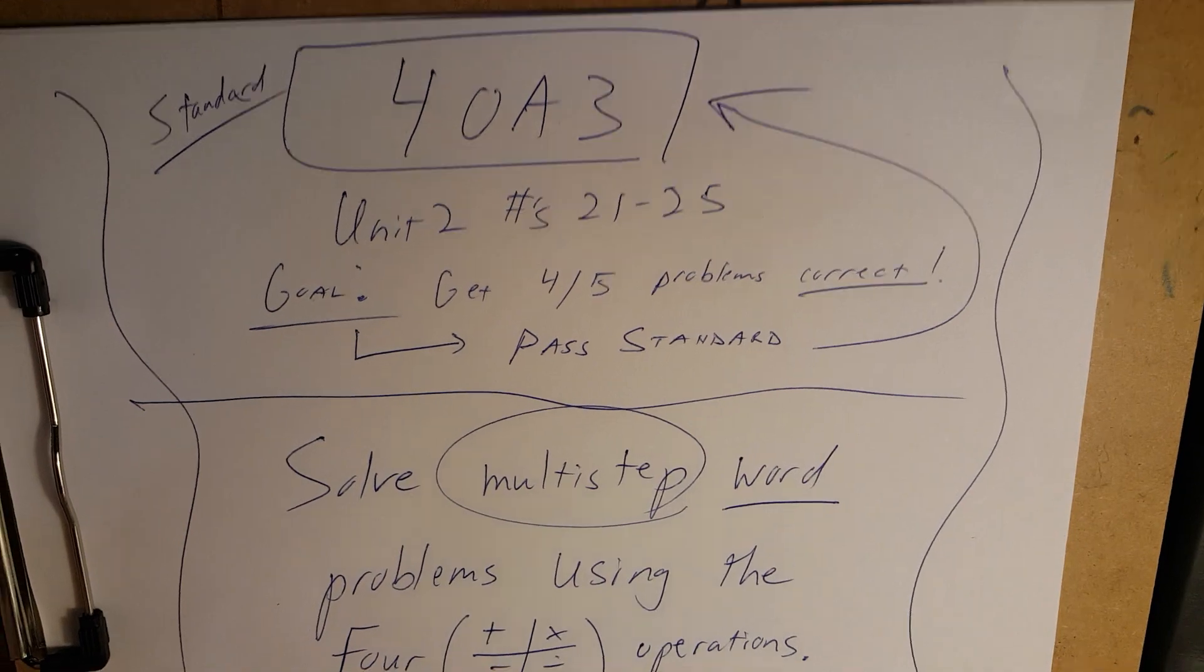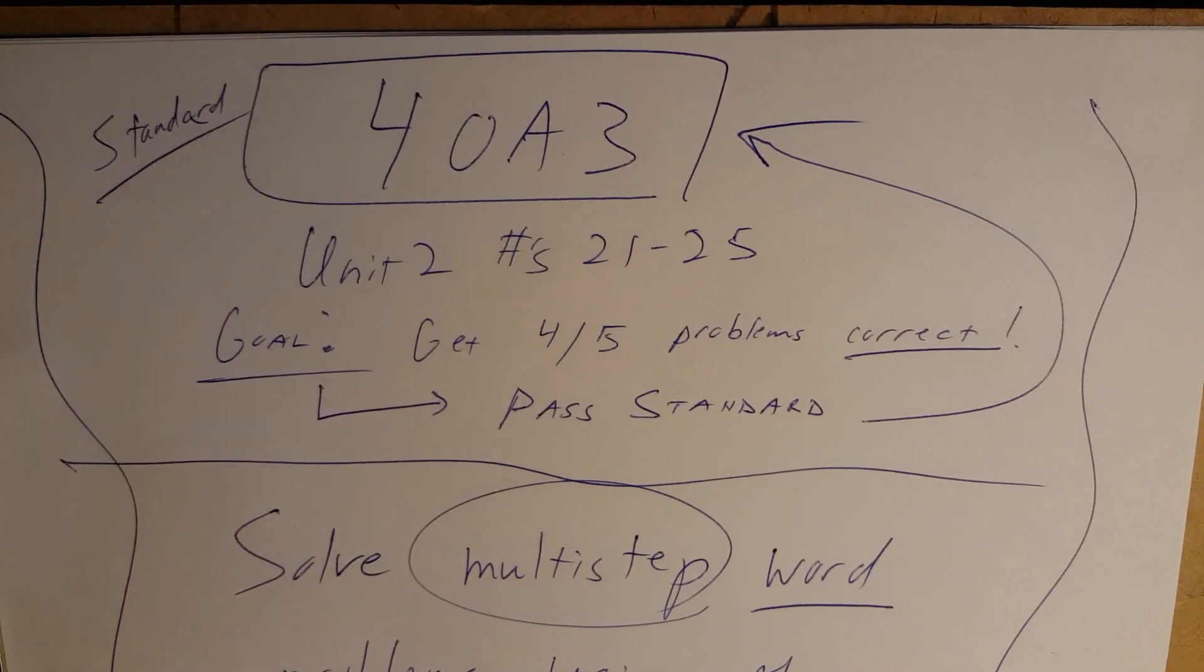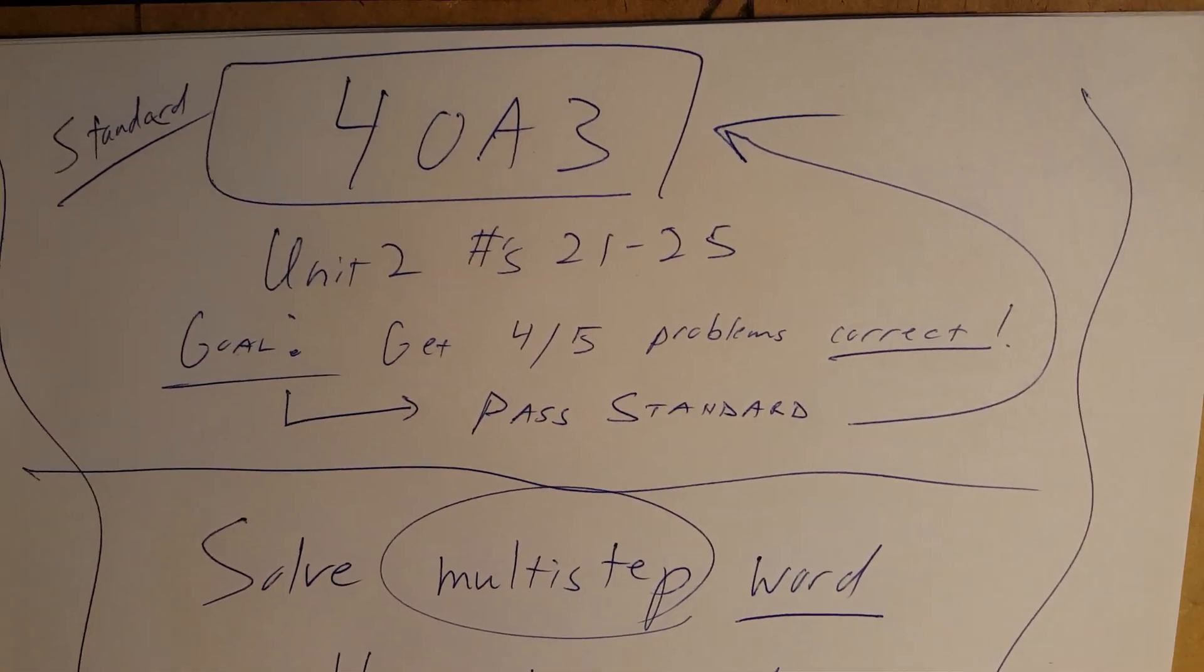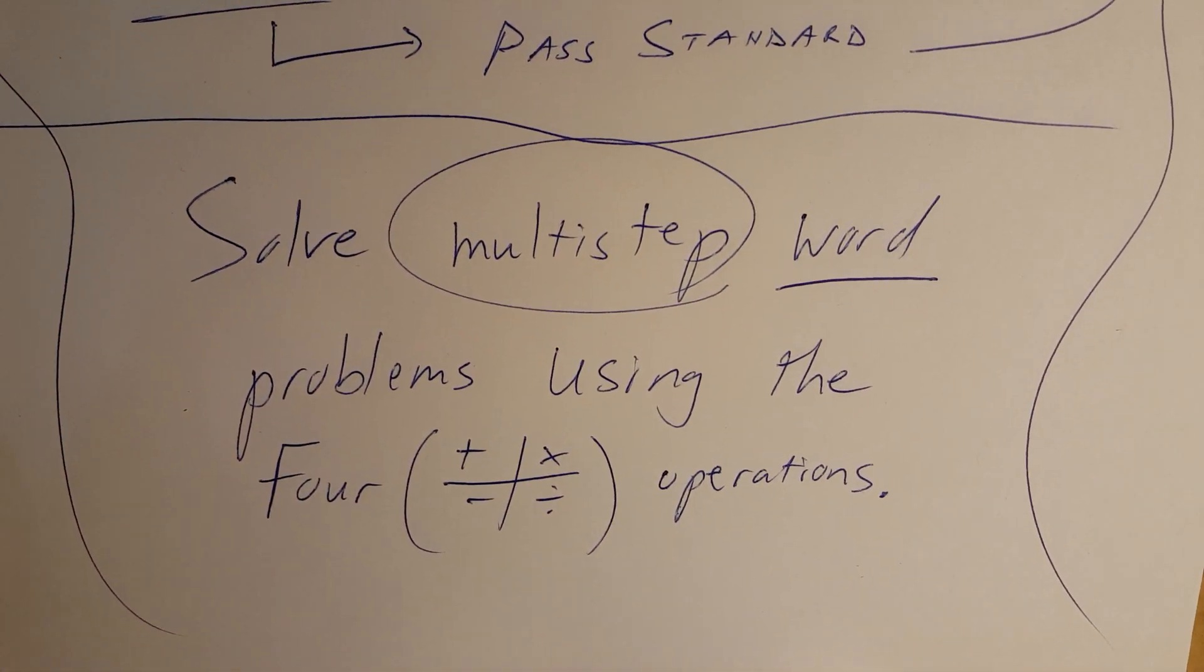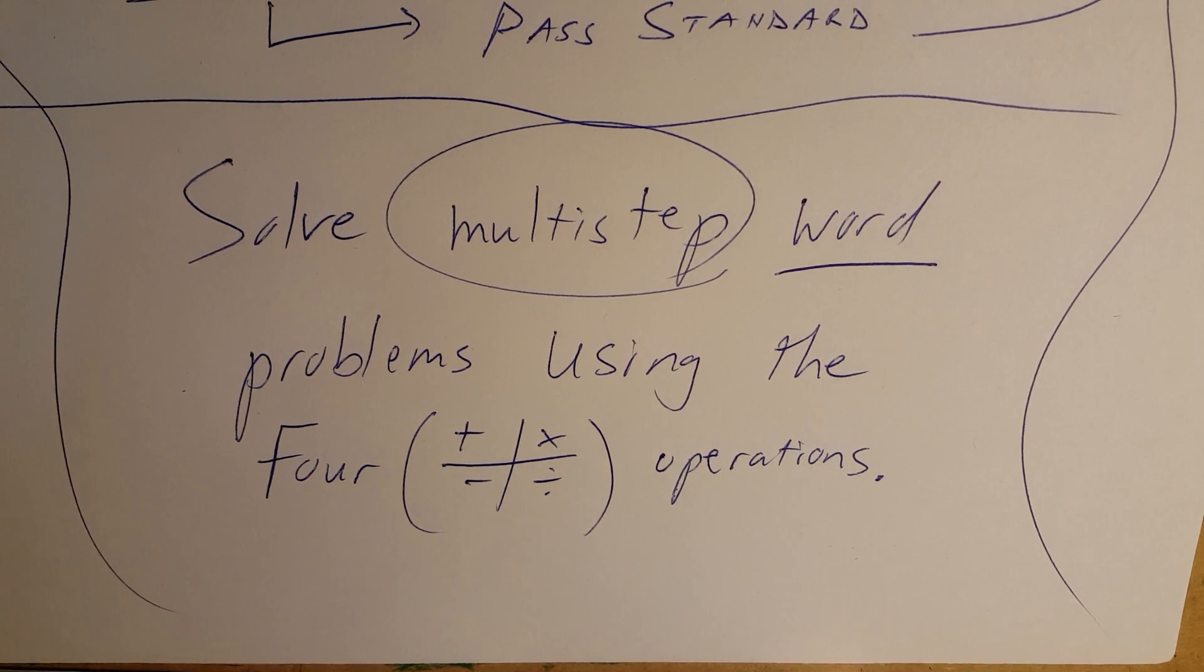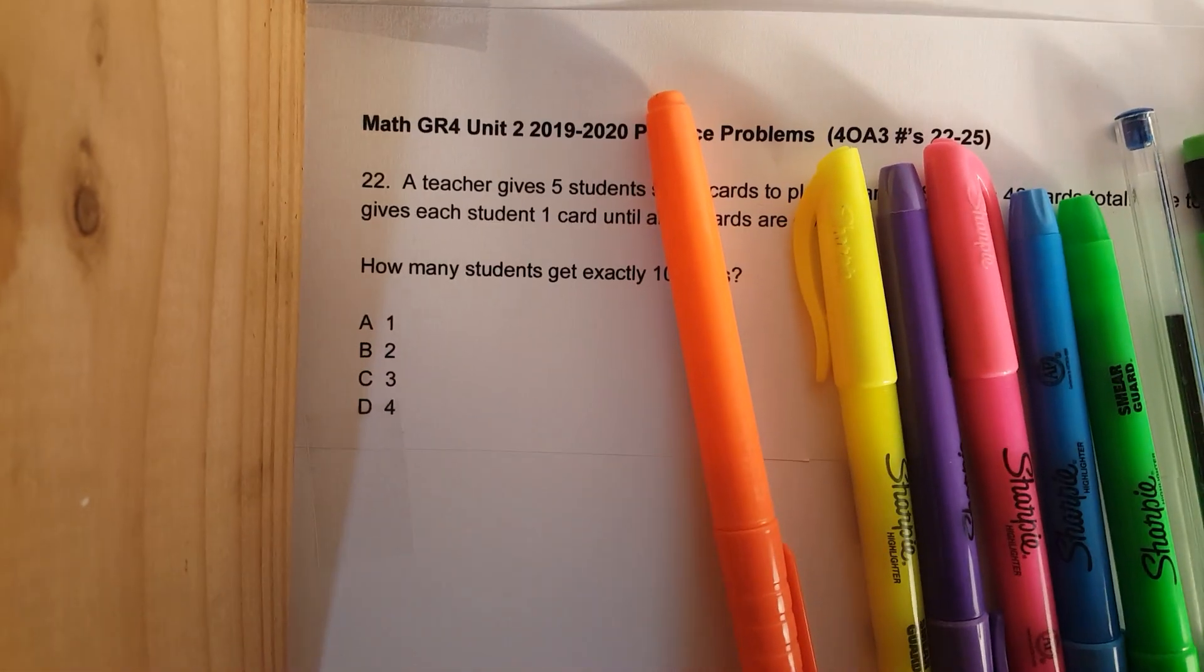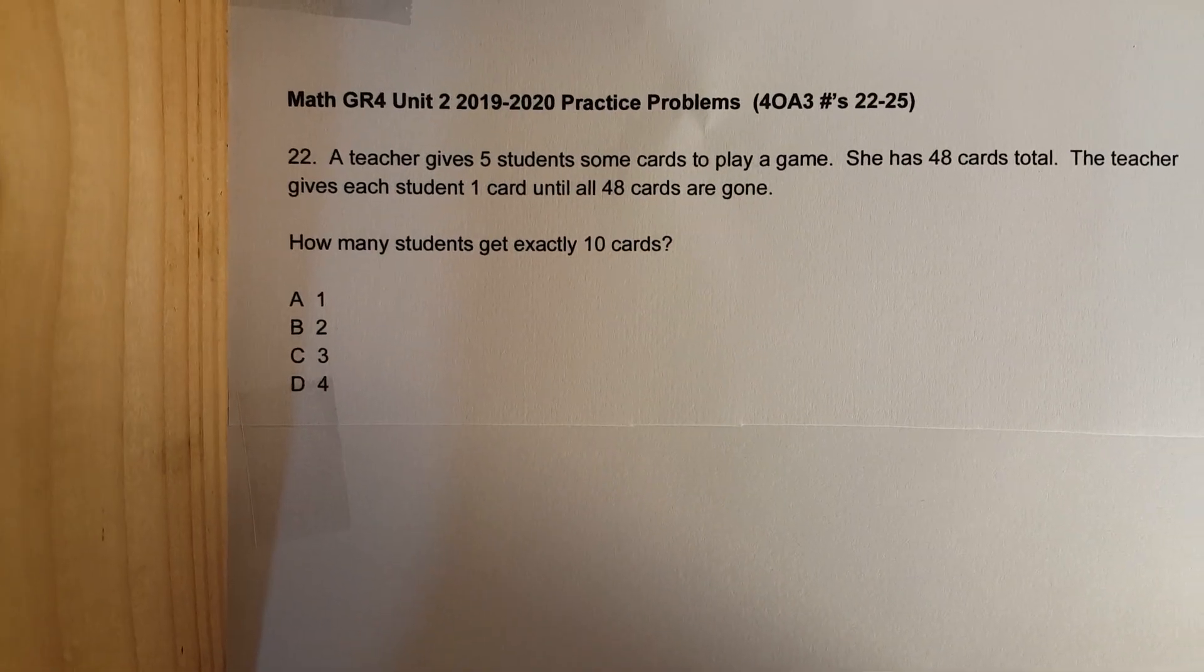Hello and happy whatever day it is for you. We are nearing the end, problem number 22, multi-step word problems, standard 4OA3, unit 2 numbers 21 through 25. Remember the goal is to get four out of five problems correct. These are our multi-step word problems using the four operations: addition, subtraction, multiplication, division.